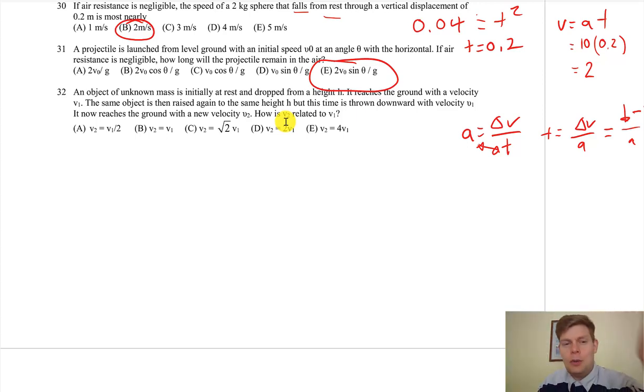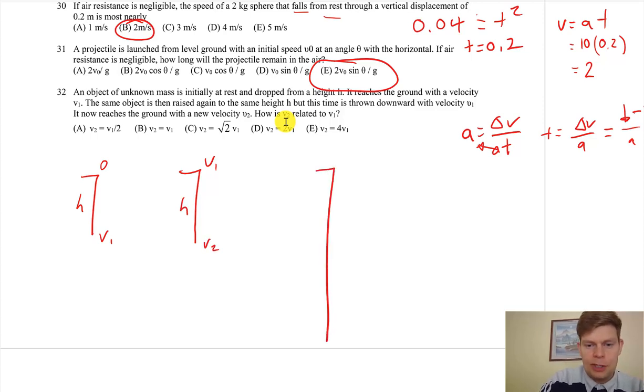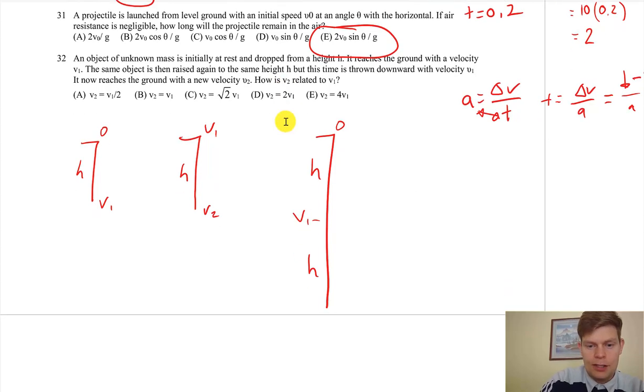This is made a whole lot easier if you think that, hey, going from like zero, you got some height to v1, and then you bring it back to the same height v1 to v2—that's the same as dropping something off a cliff that's twice the original height. So it goes from zero, at the halfway point it's at v1, and then at the end it's at v2.